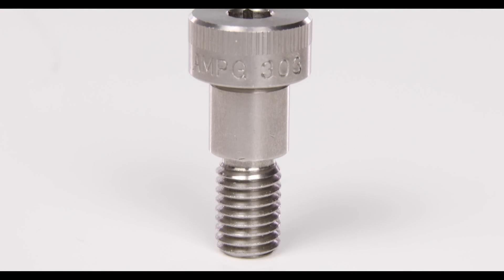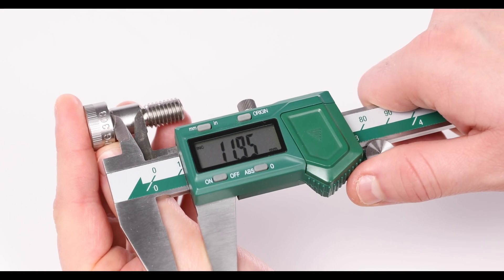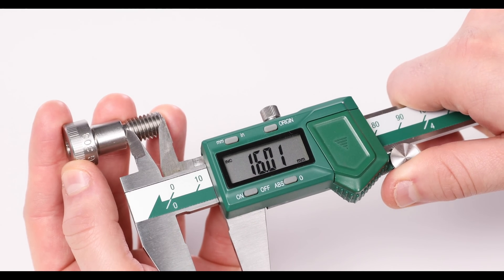With shoulder screws for example it's the length of the precisely machined shoulder section that tells us what size to look for with a separate measurement taken for the actual thread length of the screw.